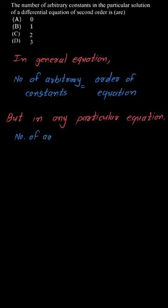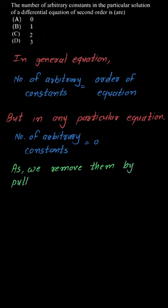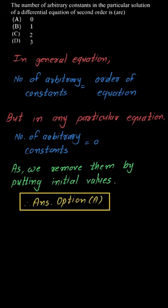The number of arbitrary constants is equal to zero. Why? Because we remove them by putting initial values. We will first get the general solution, then substitute the initial values. We will be finding the value of constant C, and when we get the value by putting those initial values, we will get zero arbitrary constants.